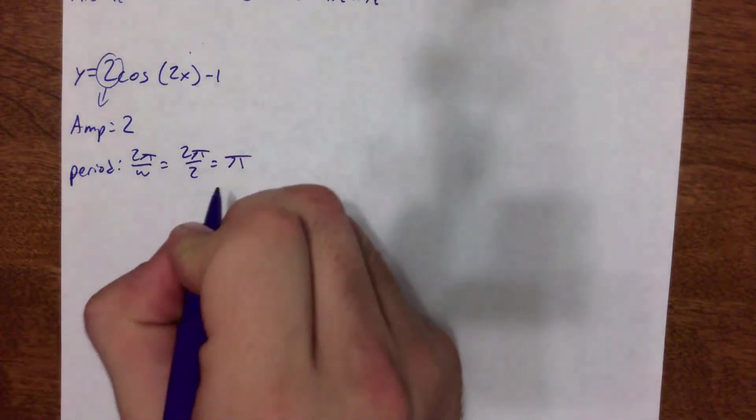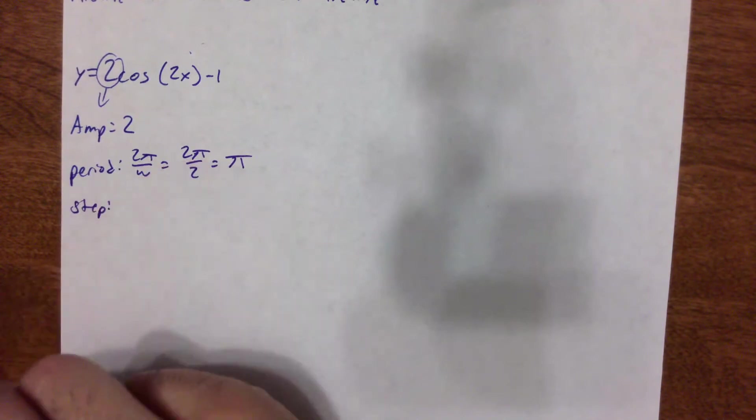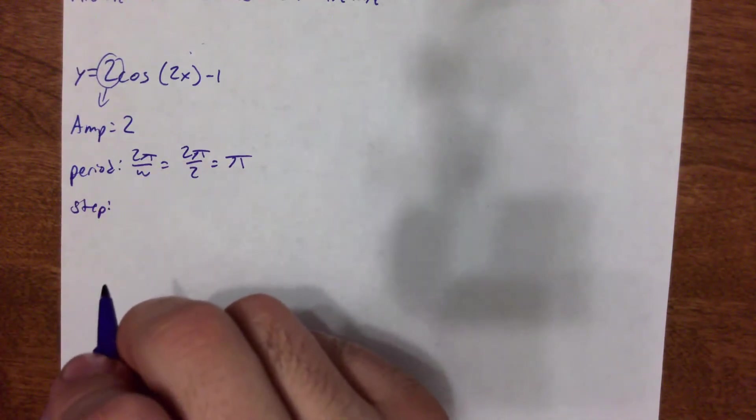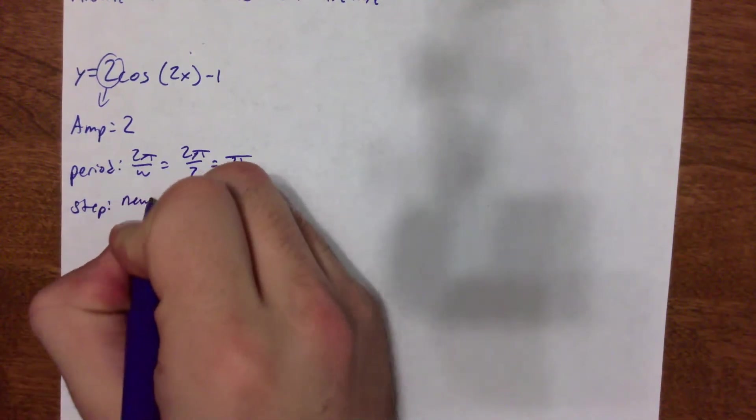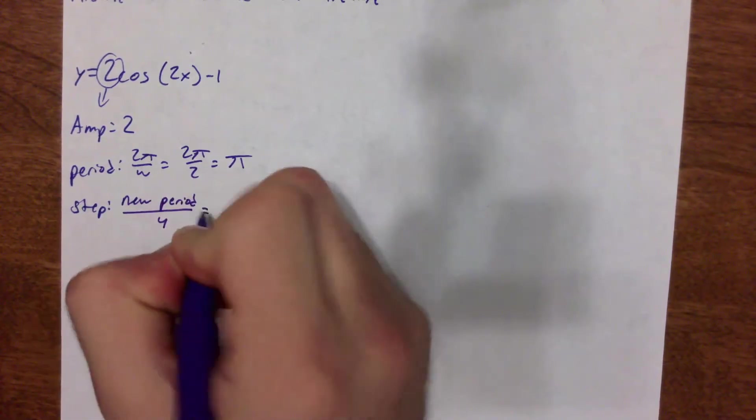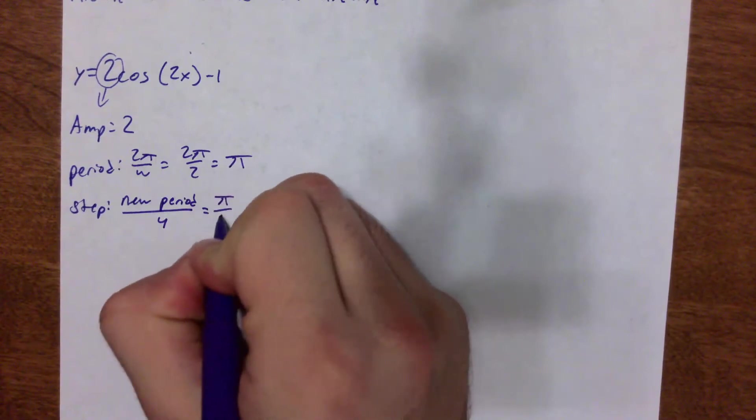Once I have my period, I can find my step. Again, that step is going to be the distance between my points, those reference points that I use. So my step is new period divided by 4. It's always divided by 4, so the new period is π. So π over 4 is going to be my step.